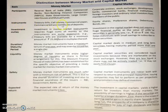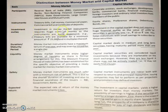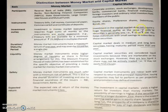Instruments of the money market include treasury bills, call money, commercial bills, commercial paper, and certificates of deposit — which we discussed in the previous class. Capital market instruments include equity shares, preference shares, debentures, and bonds. Regarding investment outlay, investment in money market instruments requires a huge sum of money as the instruments are quite expensive. Investment in capital market does not require a huge financial outlay as the value of units of securities is generally low.